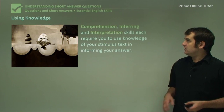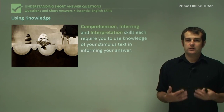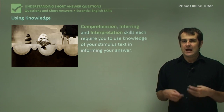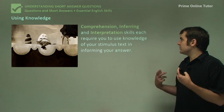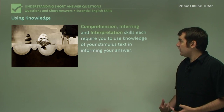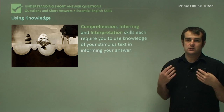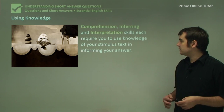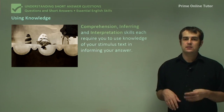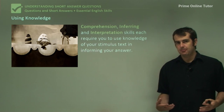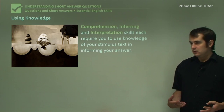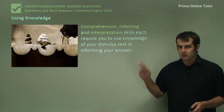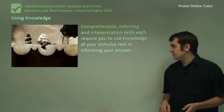Let's have a look at the using-the-knowledge part. Once you have a general idea, how do you use it? Comprehension, inferring, and interpretation skills require you to use knowledge of your stimulus text, and this helps you to inform an answer. We're going to look at this in the form of an example, and explain the image here. We're going to look at how the nursery rhyme Humpty Dumpty is symbolic of the fragility of human life.